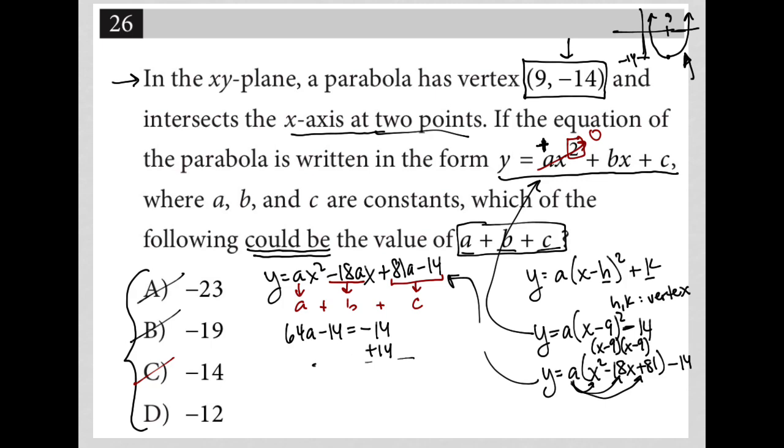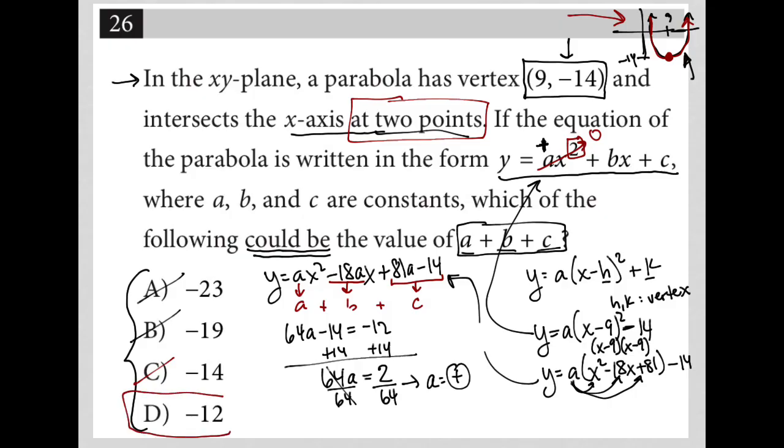Choice D must be the correct answer, but let's show you why. Our 64a - 14 = -12. When I add 14 to both sides, for the first time I end up with a positive number here. I don't care about the exact value, but I do know that this is the only situation in which a is a positive value, and I do know that a should be positive because the question told me that the parabola hits the x-axis at two points. The only way you have a vertex down here at (9, -14) and hit the x-axis at two points is if you're opening upward. So a must be a positive value. Choice D is the only value that would make that possible, so that's why choice D is correct.